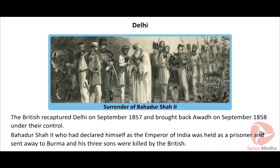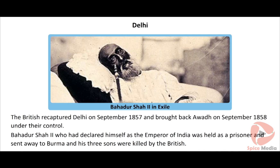Bahadur Shah's three sons were captured and shot dead by the British. Awadh was recaptured by the British in September 1858. Throughout the revolt, Hindus and Muslims worked together. Though the revolt was suppressed by the end of 1858, it took many years to restore peace.